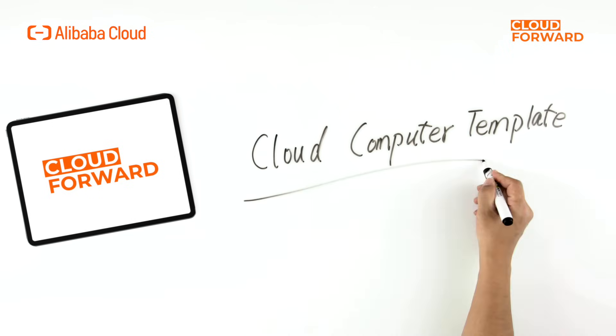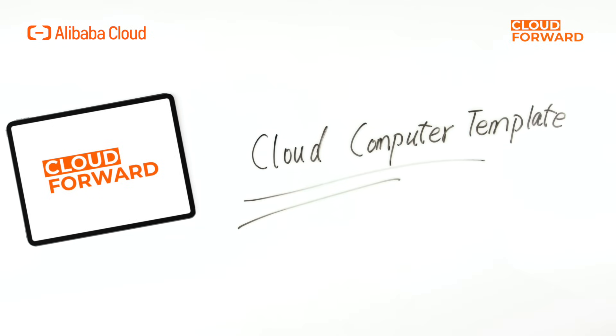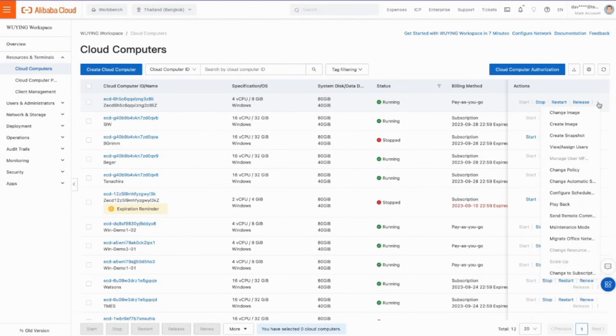When your cloud computers cannot satisfy your business requirements at some point, you can change the operating system or restore the data by changing the image for them. Besides, you can also quickly create cloud computers with identical data and configuration using cloud computer templates, because a template consists of the image data and resource specification info. You can use them directly or create your own templates.